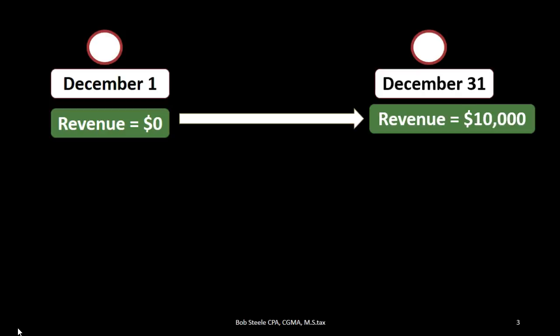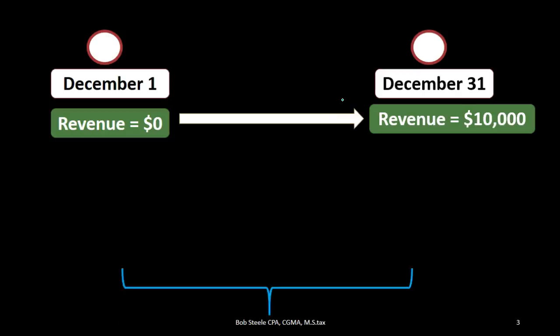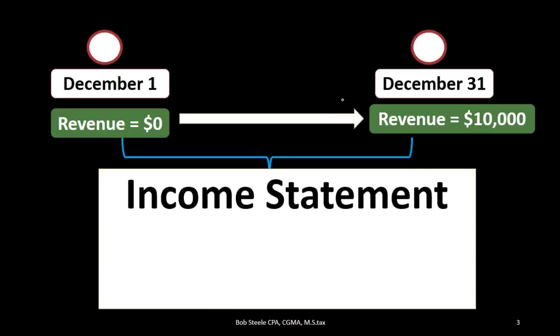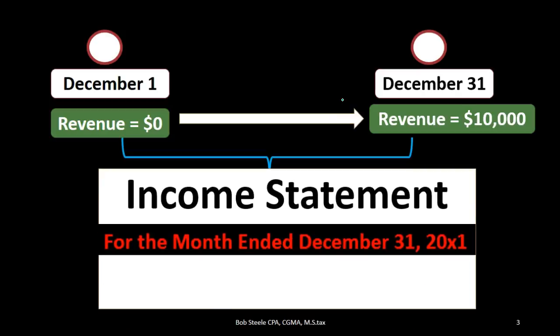We're going to reset the temporary accounts in terms of the income statement. All income statement accounts are going to be zero as of December 1st so that we can count from zero upwards till the end of the month and see that in this case revenue is going to be $10,000. That's how much we earned during this period of time — that's going to be the essence of the income statement telling the story of how we're doing.